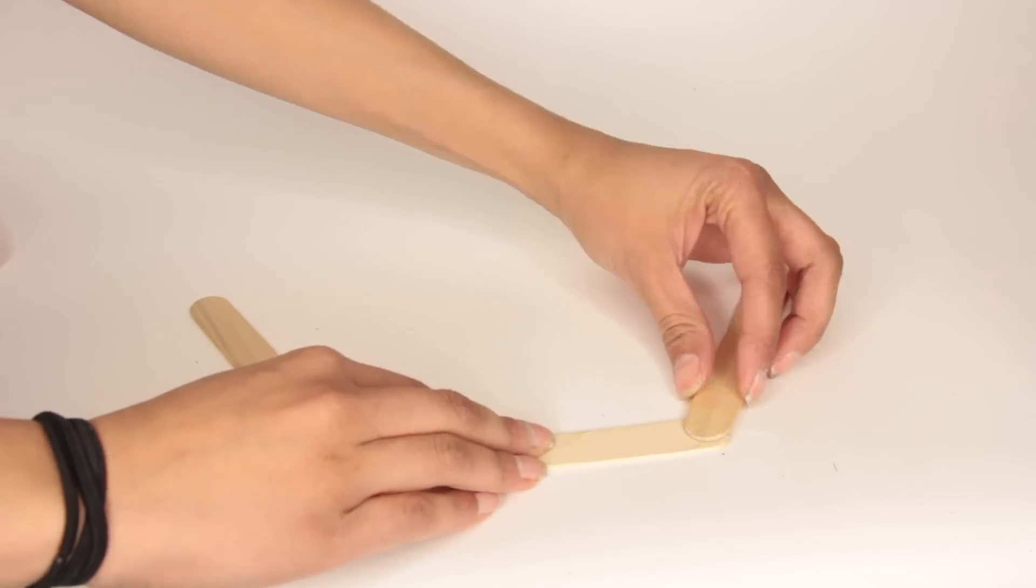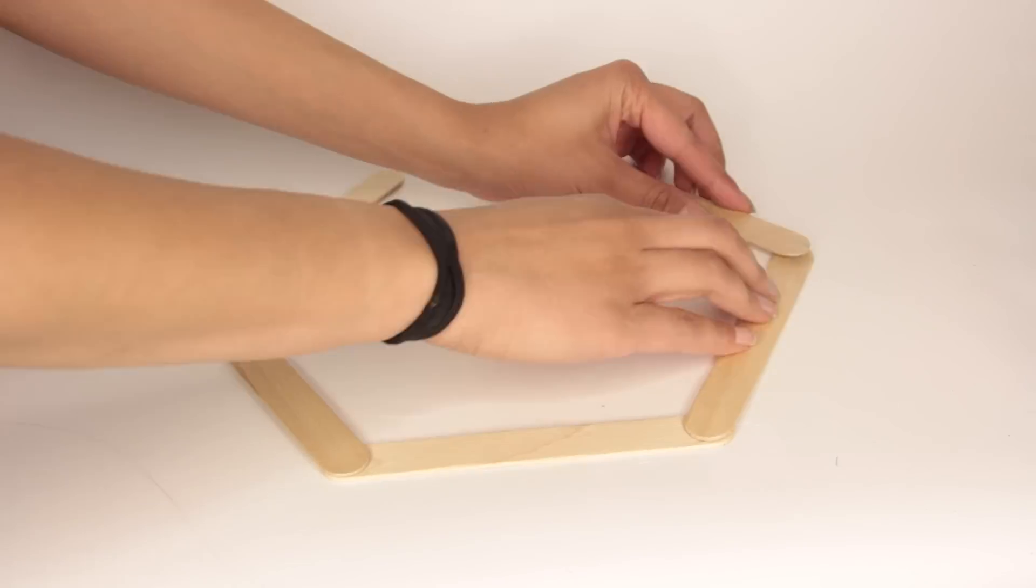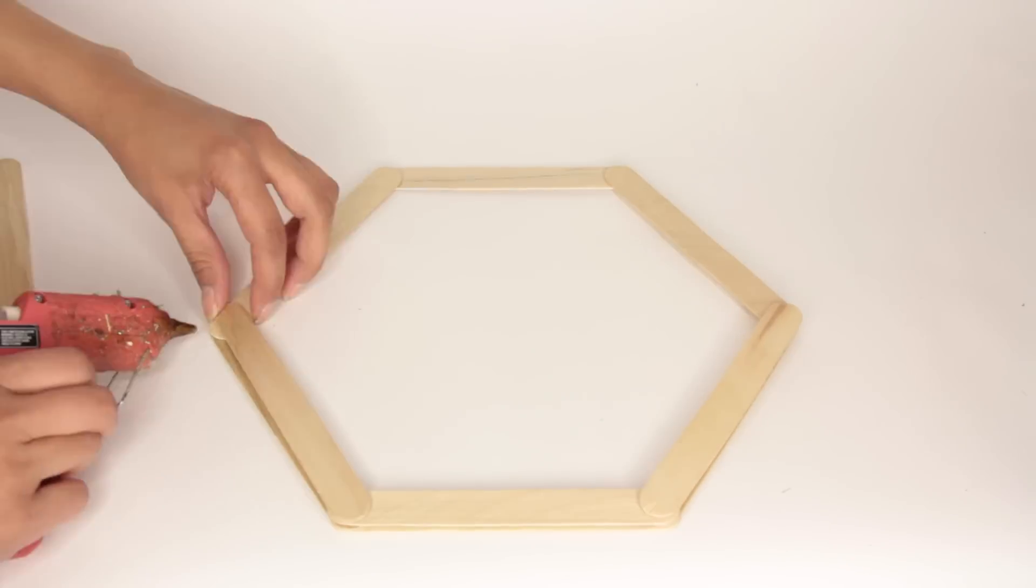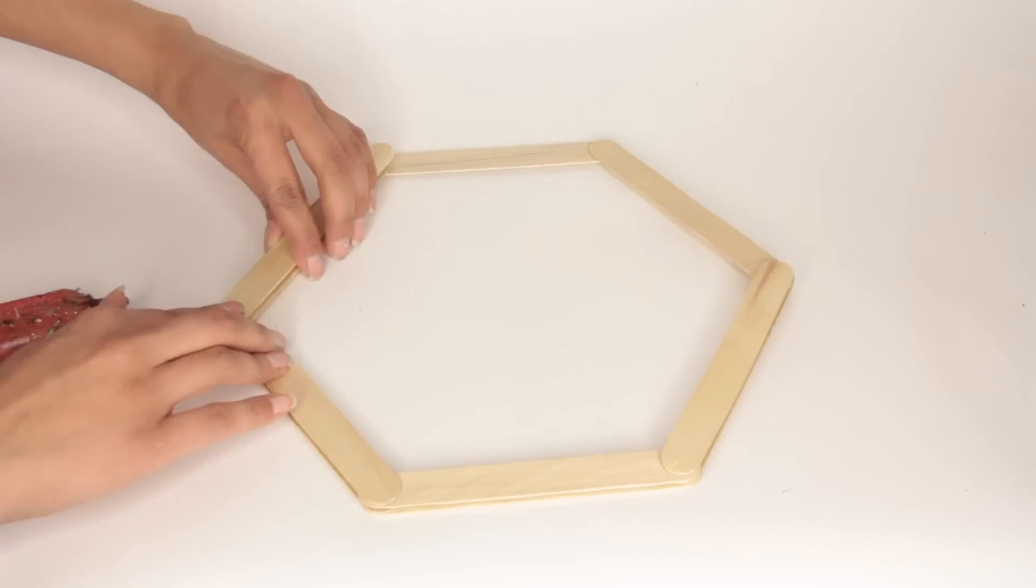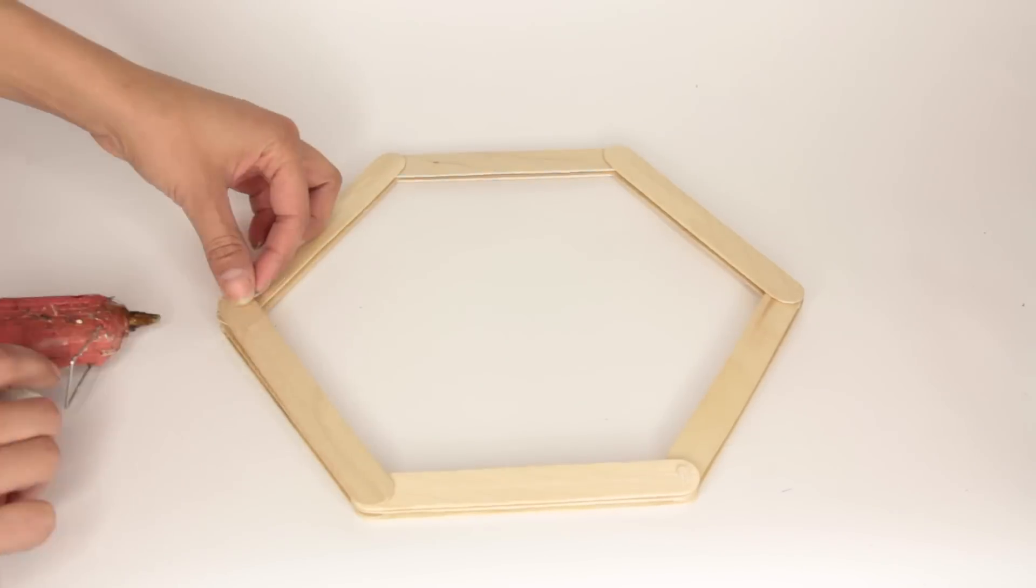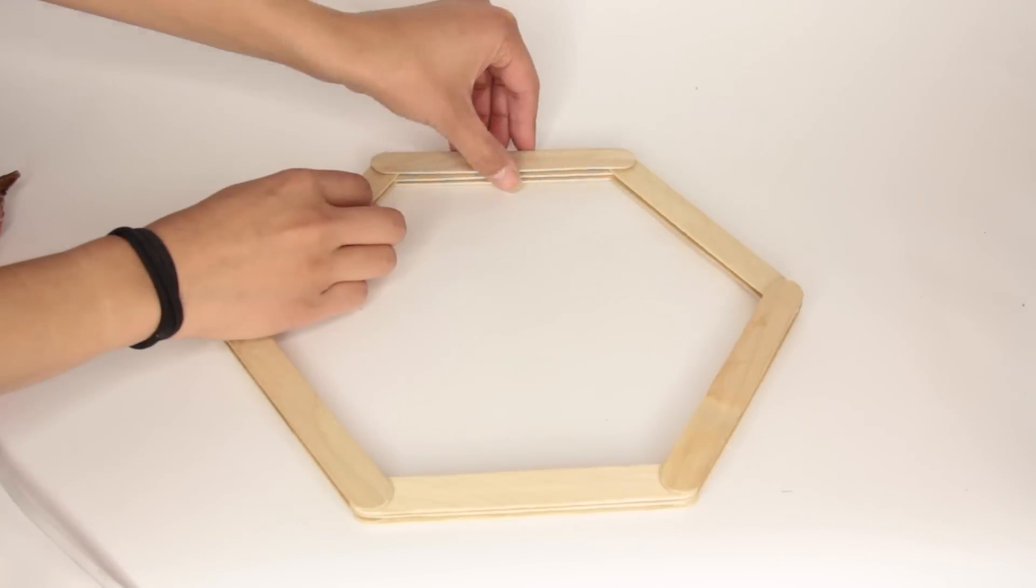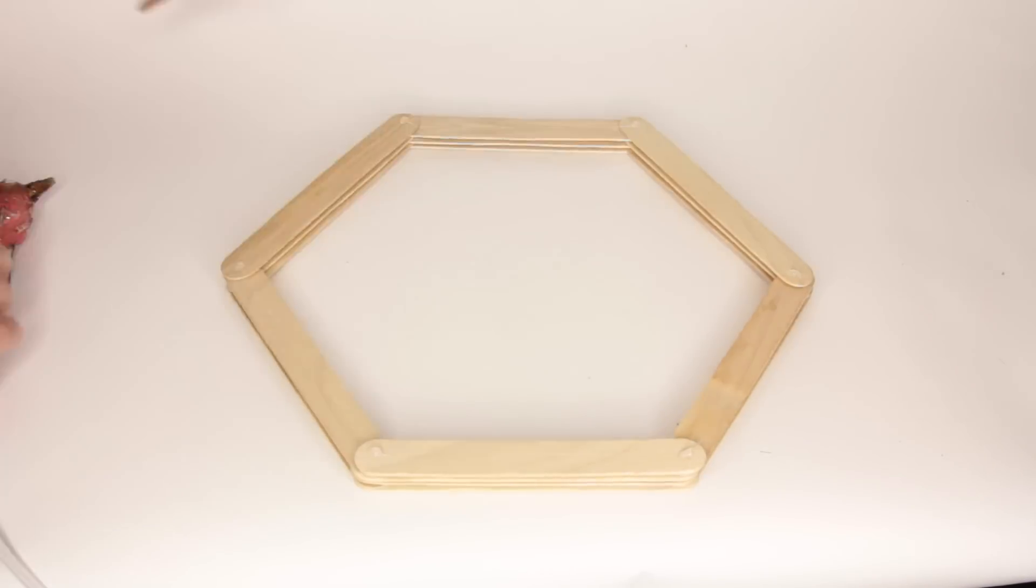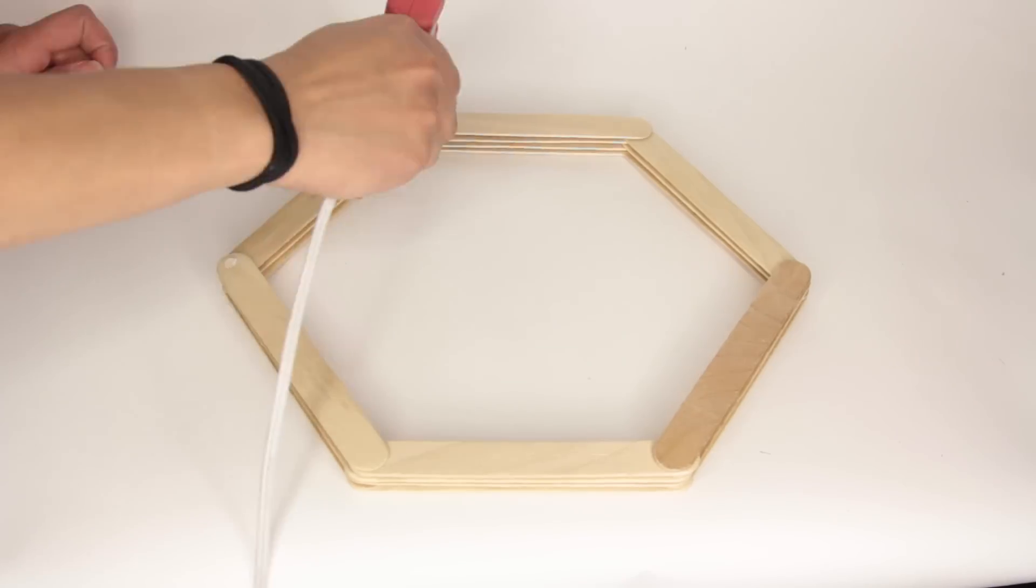You're going to need one pack of the jumbo popsicle sticks Dollar Tree carries to make the hexagon. You're going to glue one popsicle stick on top of the other in the shape of a hexagon. I start off with a popsicle stick at the bottom, which is the base of the hexagon. Then I add two sides, glue two more sides on top of the initial two sides, and then I glue on the top of the hexagon. And I keep following this pattern.